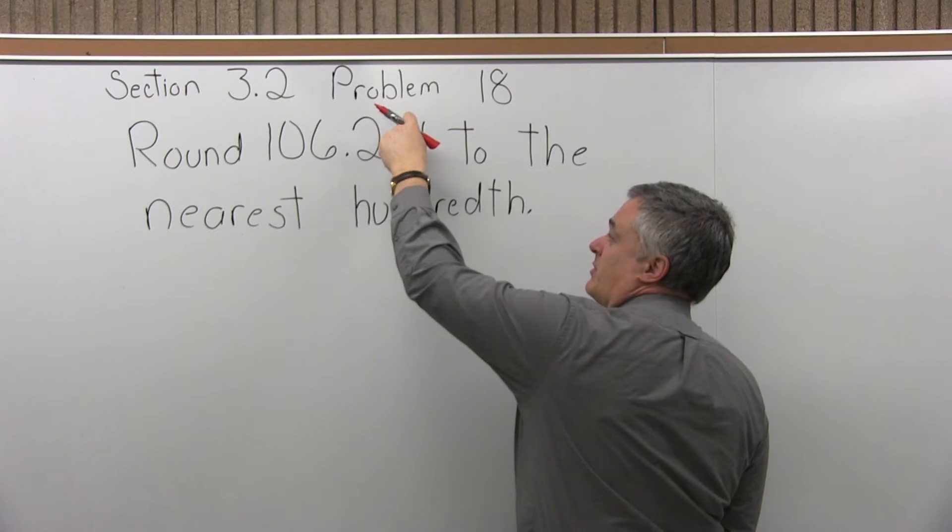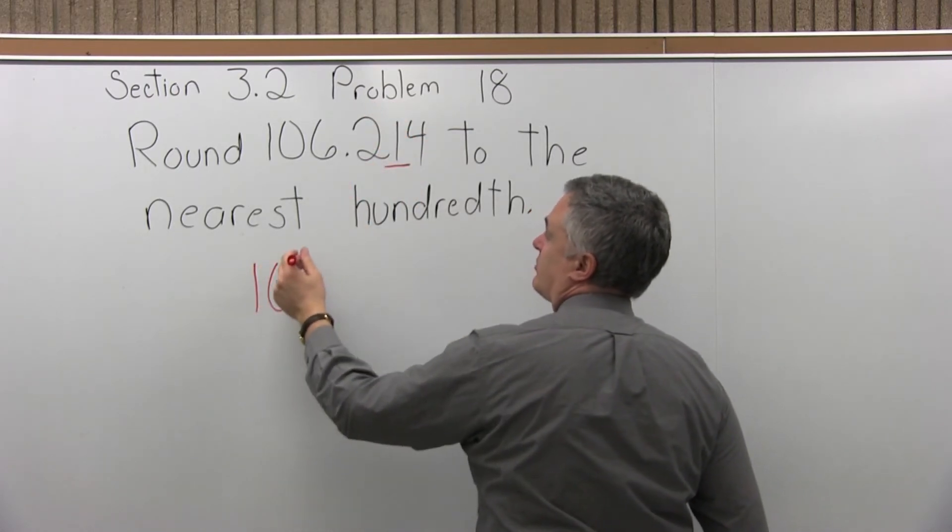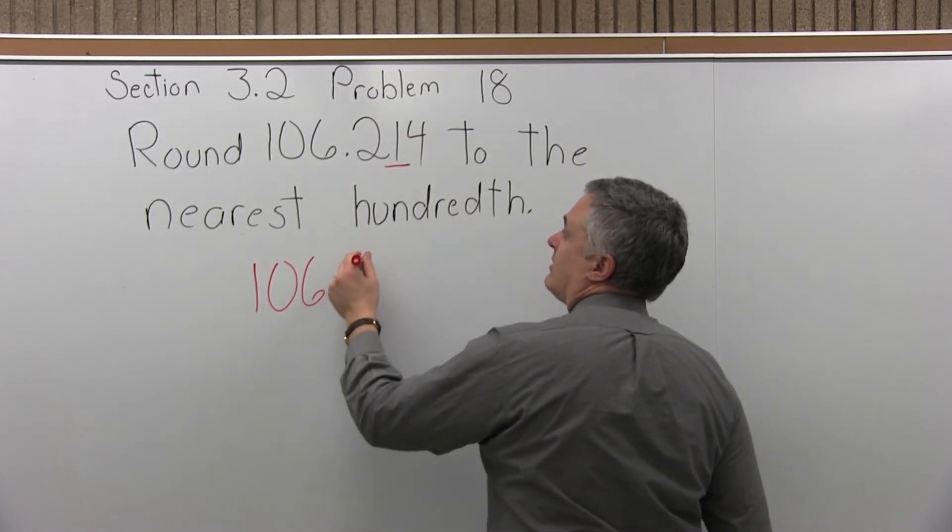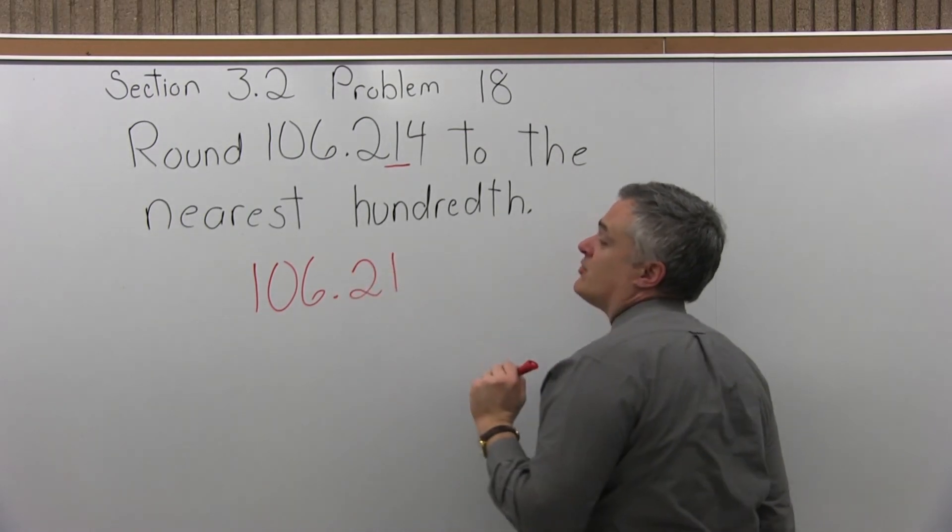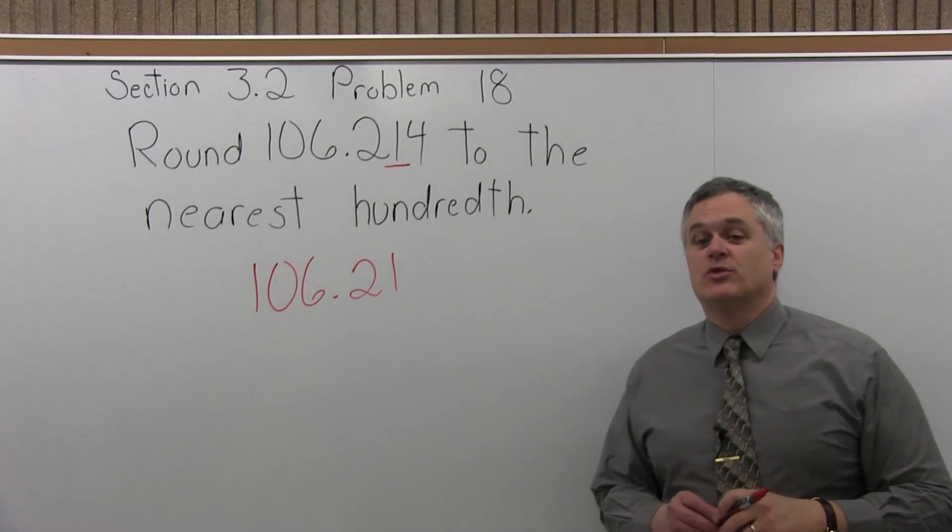If it were bigger than four, we would bump it up one, but that's not the case. So for this particular problem, this number rounded to the nearest hundredth is 106.21.